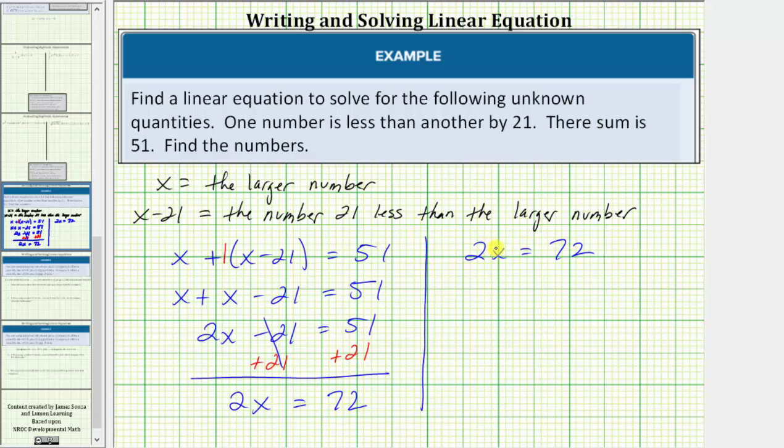Because two x means two times x, to solve for x we divide both sides by two. On the left, two divided by two simplifies to one. One times x is x. X equals seventy-two divided by two, which equals thirty-six.